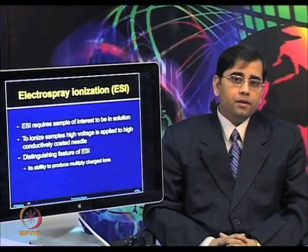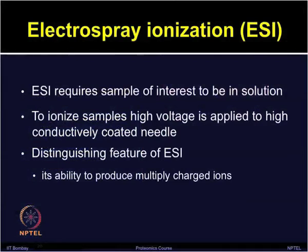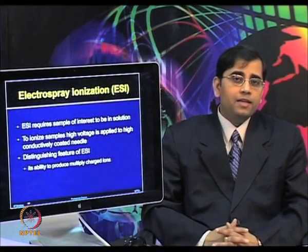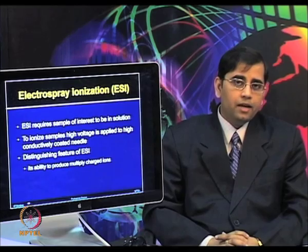ESI requires the sample of interest to be in solution. To ionize the samples, a high voltage is applied to a highly conductively coated needle, resulting in the sample becoming charged either positively or negatively. Positive ions are primarily used for the analysis of proteins. The distinguishing feature of electrospray ionization is its ability to produce multiply charged ions; the number of charges accepted by a molecule depends on its basicity and size.